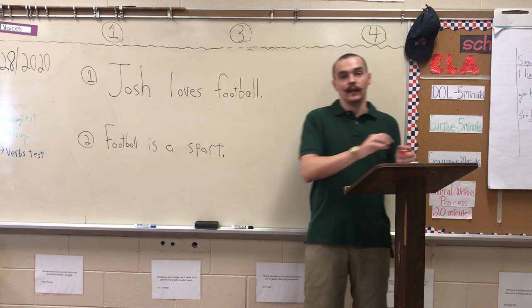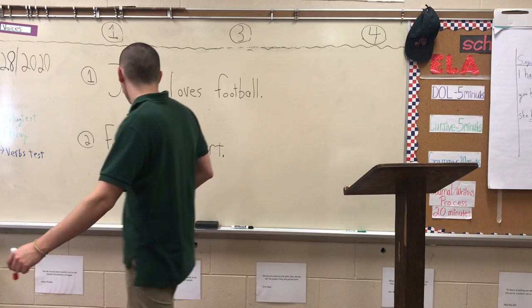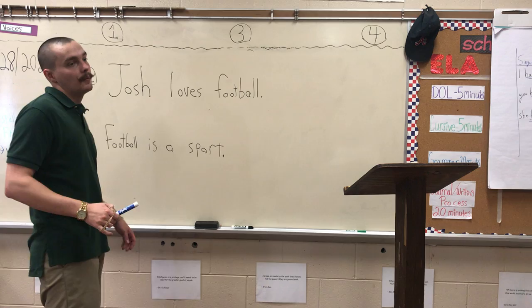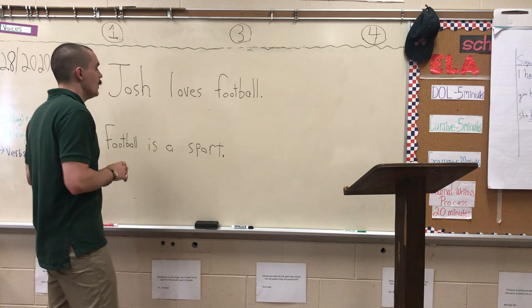Let me show you some examples. Blue is going to be where the subject is — you'll see it on your line. Red is where the predicate is going to be. Let's start with number one: Josh loves football.